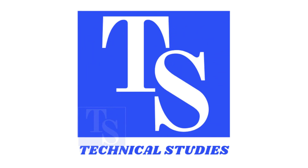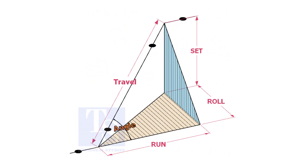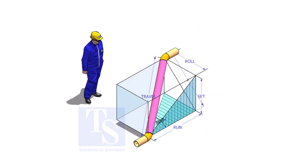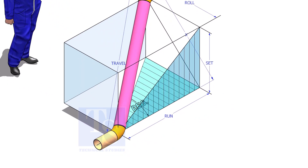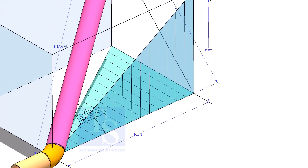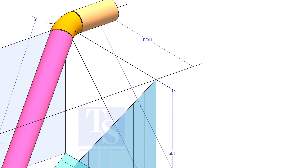Welcome to technical studies. In a piping drawing of a double rolled offset, usually the dimensions of the run, set and roll are given. In this video, I will show you how to calculate the travel length and the including angle of a double rolled offset pipe.